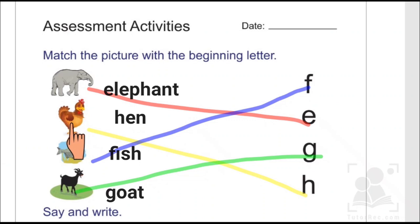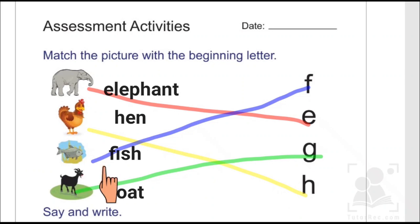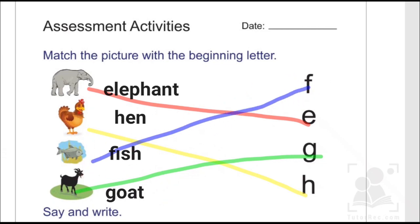The third picture is of a fish, which spells F-I-S-H, therefore we matched this picture with its respective beginning letter F. The last picture is of a goat, the word 'goat' spells G-O-A-T, therefore we matched the last picture with its respective beginning letter G.